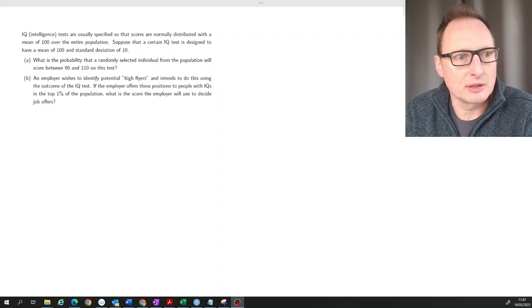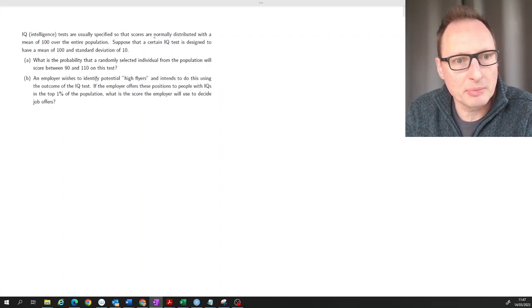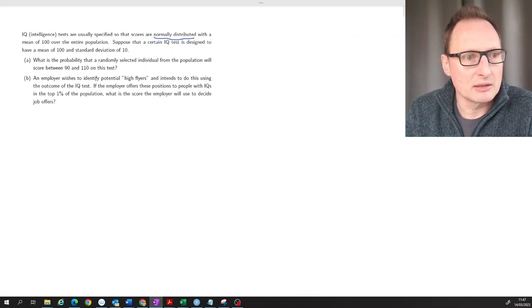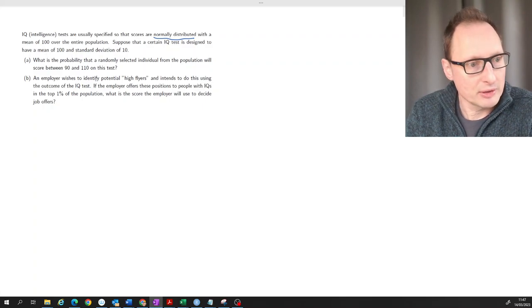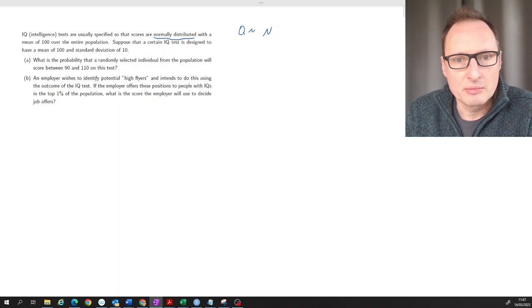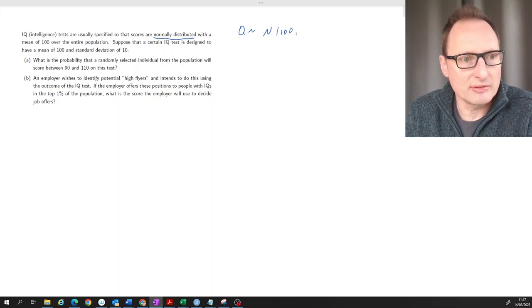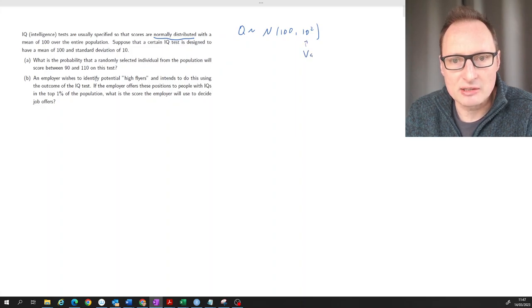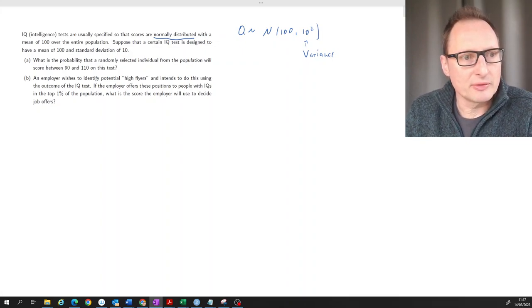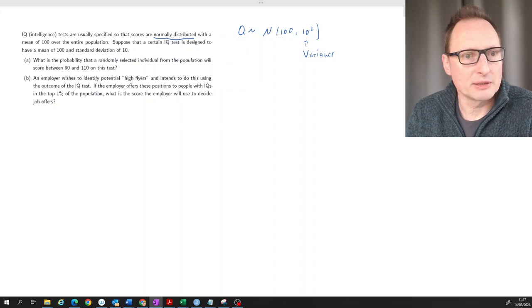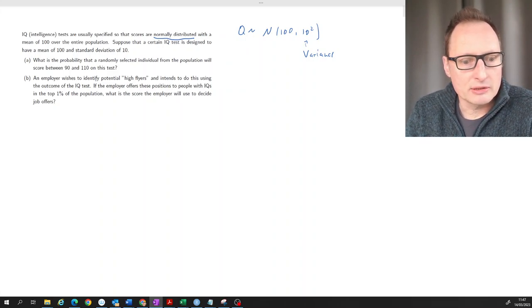This is an applied question in which we will apply our knowledge about normally distributed random variables. Here we have a random variable, let's call it Q, which is normally distributed with mean 100 and standard deviation 10. That means variance 10 squared. Remember, we always refer to the variance as that second input. So what does that random variable Q represent? It's the results for an IQ test for some population. Let's go and answer these questions.